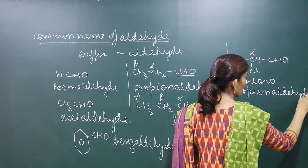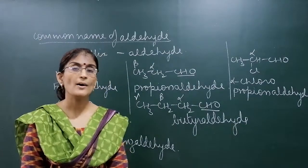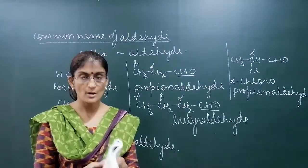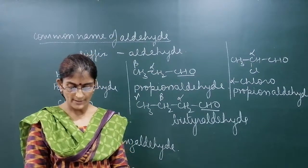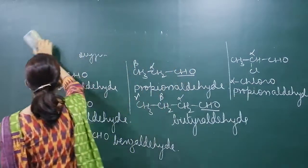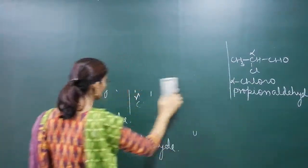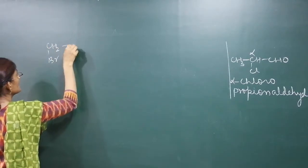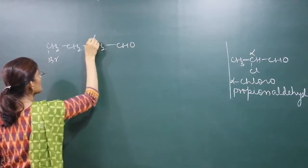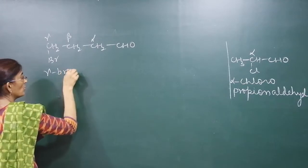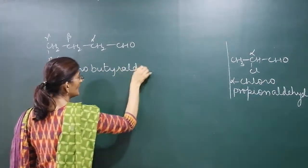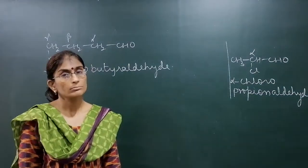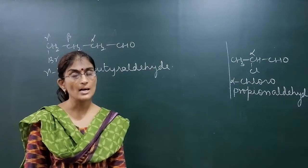So while writing the position of a group attached to an aldehyde, we use the terms alpha, beta, gamma, and delta to specify position. For example, if we have BrCH₂–CH₂–CH₂–CHO, we know the positions are alpha, beta, gamma — the bromine is at the gamma position, so the common name is gamma-bromobutyraldehyde.